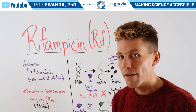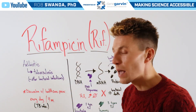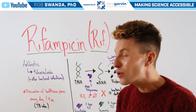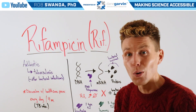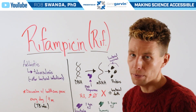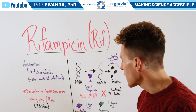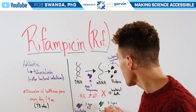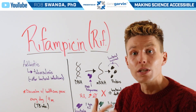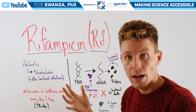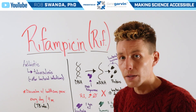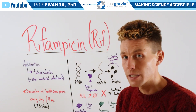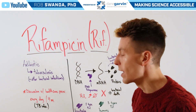One question you may have is how rifampicin is able to target bacterial RNA polymerase when we as humans also use this exact same process and have our own RNA polymerase. That's because bacteria have one type of RNA polymerase, but humans actually have three. We're able to turn different parts of our DNA into different mRNA, and the sizes of those RNA polymerases are different, therefore allowing rifampicin to be highly specific to that bacterial RNA polymerase.